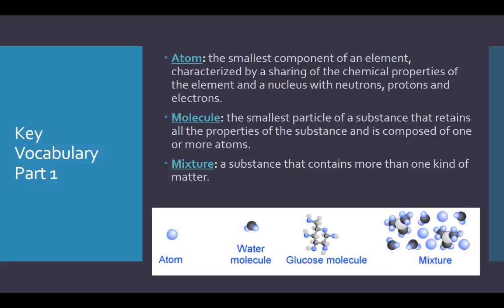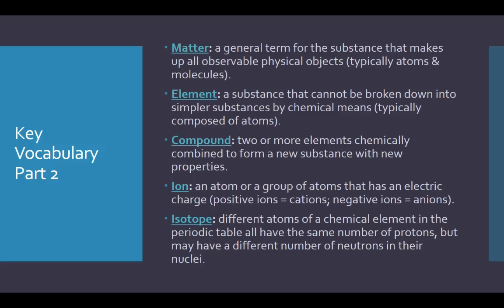A mixture is a substance that contains more than one kind of matter, and they're physically combined more than chemically combined. Matter is a very general term for the substances that make up all of the observable physical objects — typically we're referring to atoms and molecules. An element is a substance that can't be broken down into simpler substances by chemical means. Oxygen is an example — you can still have O2, which is a molecule of oxygen, but it's still an element because it's just one type of atom.